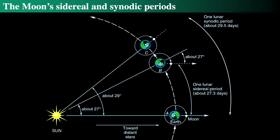The sidereal month is shorter than the synodic month by about 2.2 days, which means there's approximately one additional sidereal month per year compared to the synodic month.